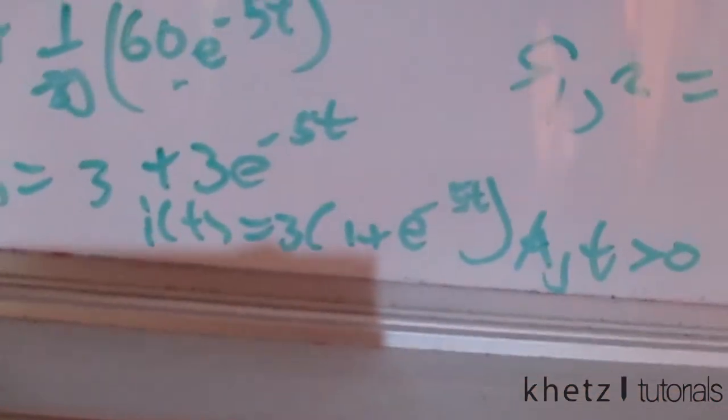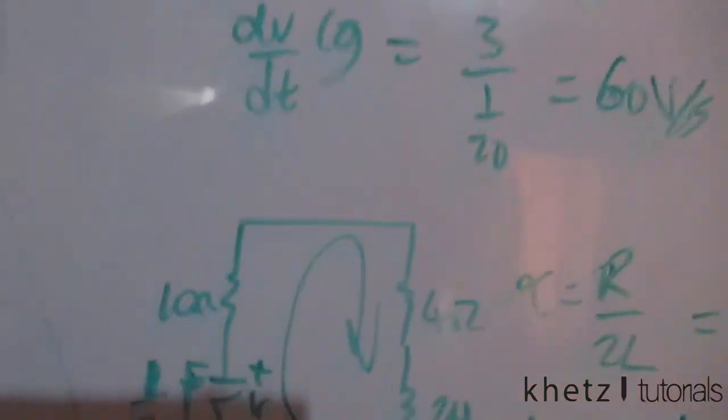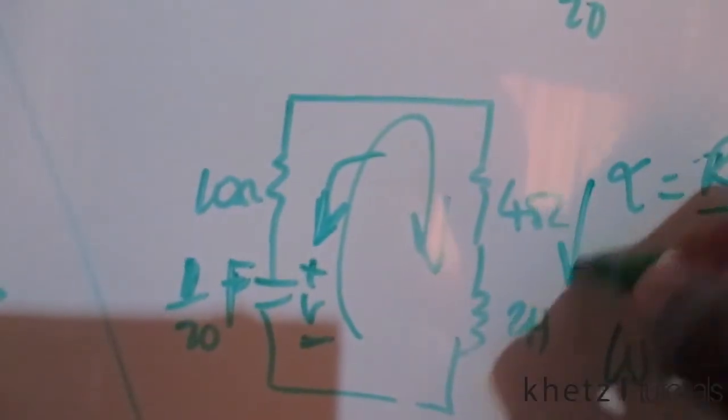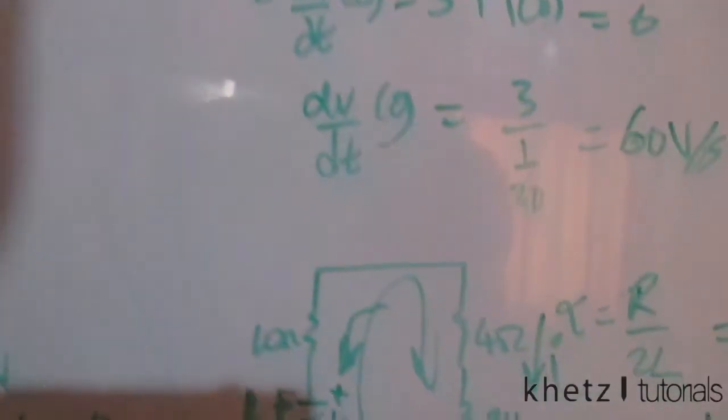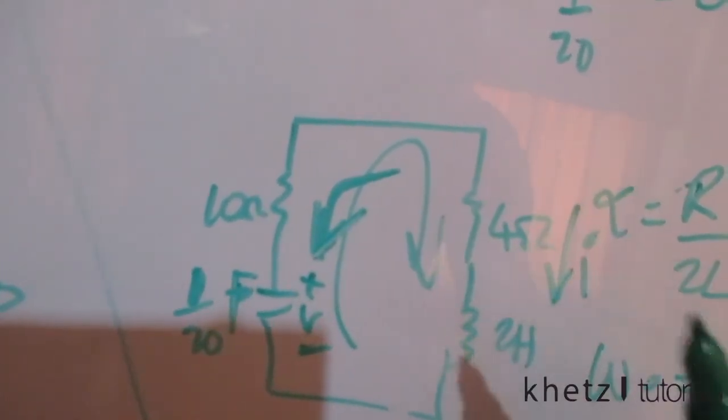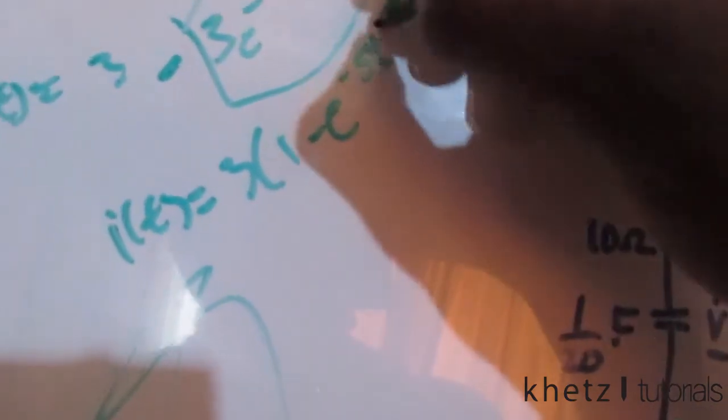However, we must check the sign convention. The positive terminal of v is defined such that the current would flow downward through the capacitor, but the indicated current i flows in the opposite direction. Therefore we must introduce a negative sign on the derivative term, giving the final answer i(t) = 3(1 − e^(−5t)) A for t > 0.